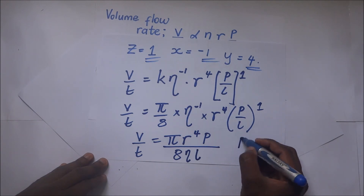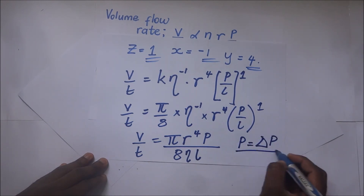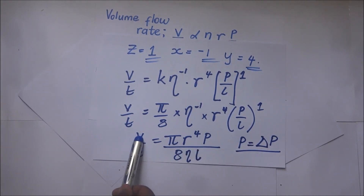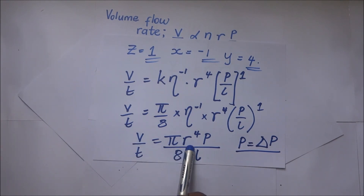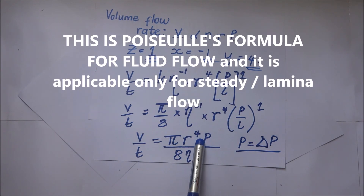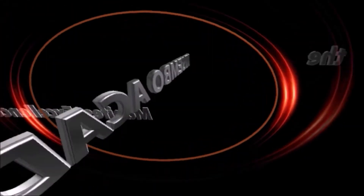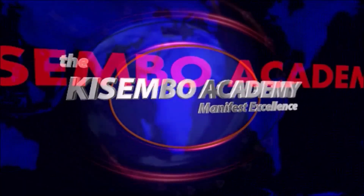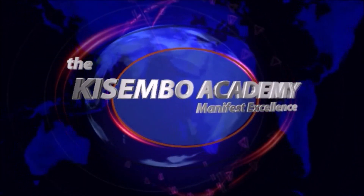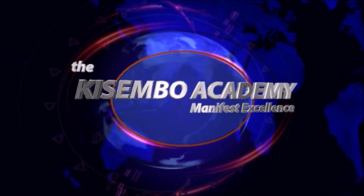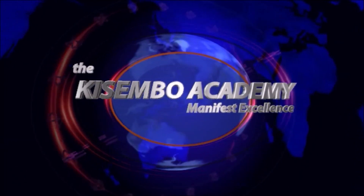Rearranging, V over T equals π·R⁴·P divided by 8·η·L, where P is the change in pressure P2 minus P1. This expression showing the volume flow rate is Poiseuille's formula, and it only applies for steady flow, also called laminar flow, in liquids. Thanks for watching — subscribe to Kisemu Academy.